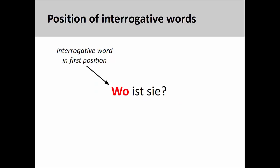In German, like in English, the interrogative word comes at the beginning of the sentence. Here the interrogative adverb wo, where, sets up a question inquiring about the location of the subject.